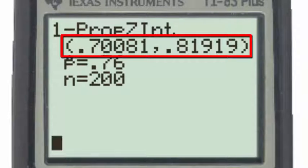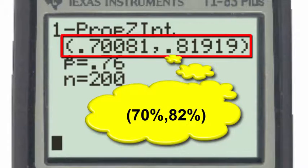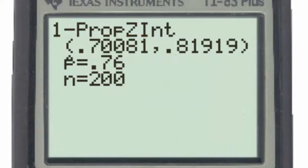So now when we click calculate, we're given the 95 confidence interval estimate of the proportion of households in the population that have at least one computer. That estimate is approximately 0.70 to 0.82, or somewhere between 70 and 82 percent of the population have at least one computer based on the sample.